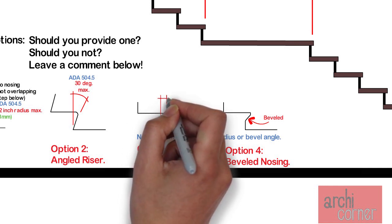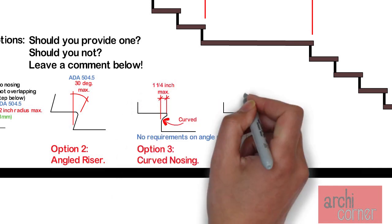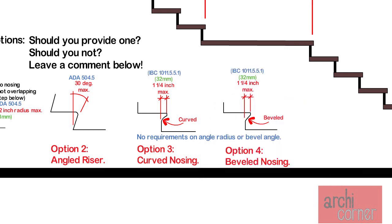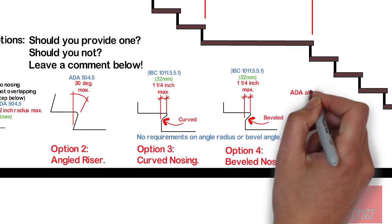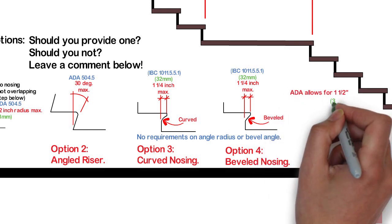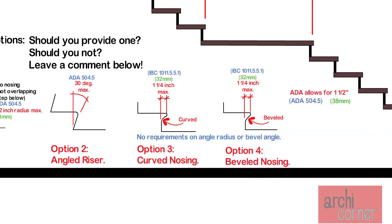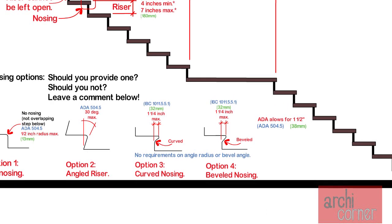Regardless of the option you take, if you do provide a nosing, the nosing may project one and a quarter inches maximum from the step below. Note that this is different from the ADA because the ADA allows for one and a half inches. However, most stairs are used for egress and the IBC calls for one and a quarter inches.